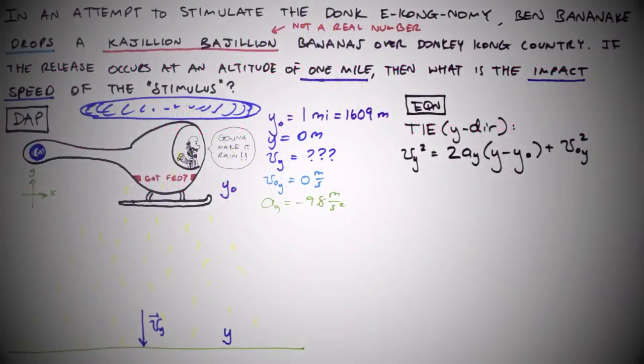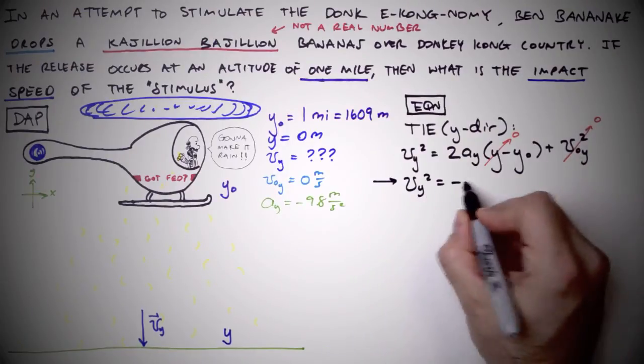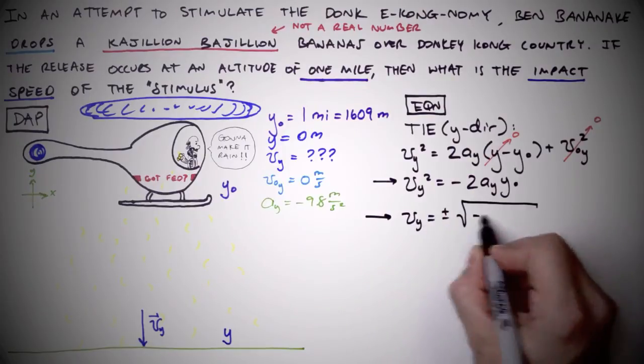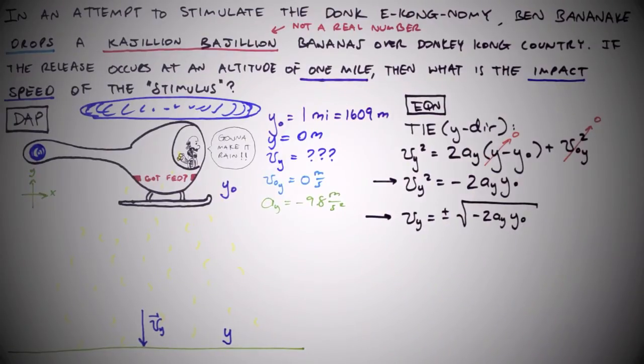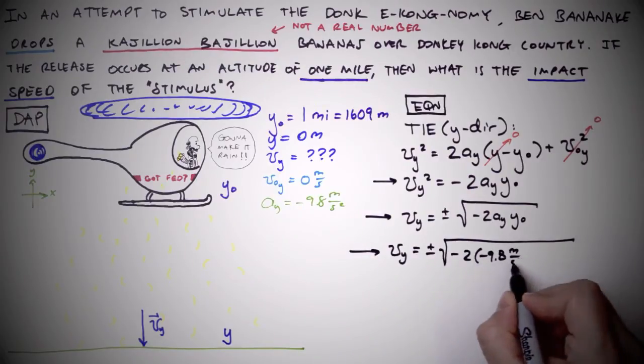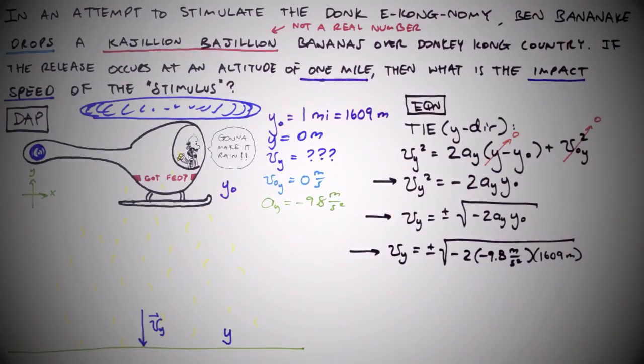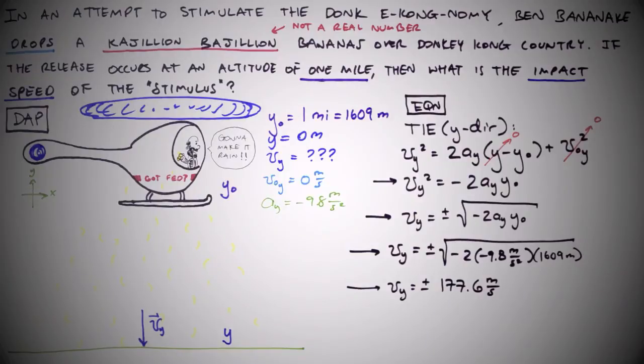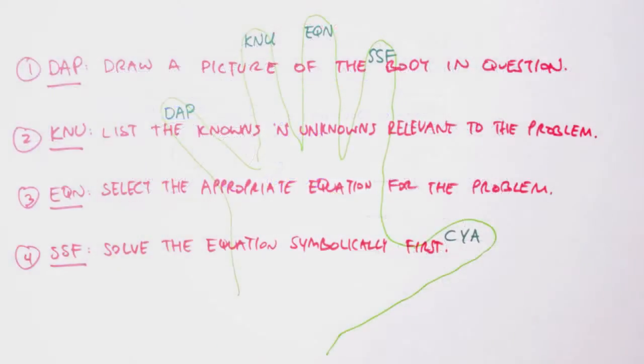Step four: solve the equation symbolically first. Numerical values should only be inserted once the equation has been solved for the unknown. Terms will often cancel, simplifying solutions, and much physical insight about our world can be gained from delaying the gratification that comes with plugging and chugging. Oh, and don't forget the units when inserting numerical values. Units are such an important and helpful aspect of problem solving that forgetting them is practically an unpardonable sin. It's like I always tell my students: you take care of your units and your units will take care of you.